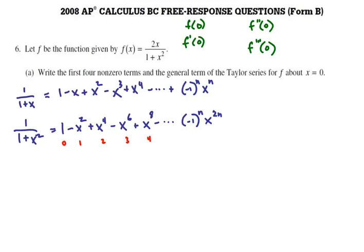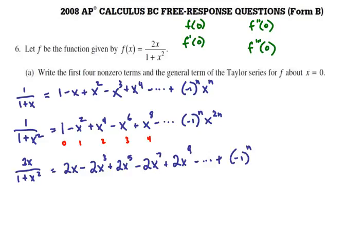And we're almost there. Now we just need to multiply through by 2x. And this time, we have negative 1 to the n times 2x. And then our x should be 2n plus 1. So 2 times 2 is 4 plus 1 would be 5. 2 times 3 is 6 plus 1 would be 7. So that would be 2n plus 1.